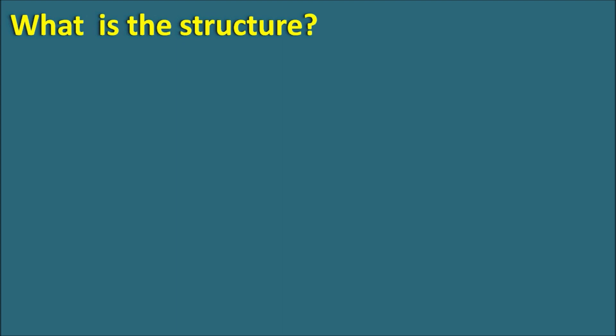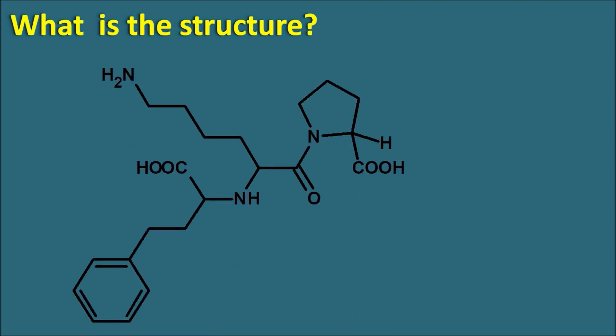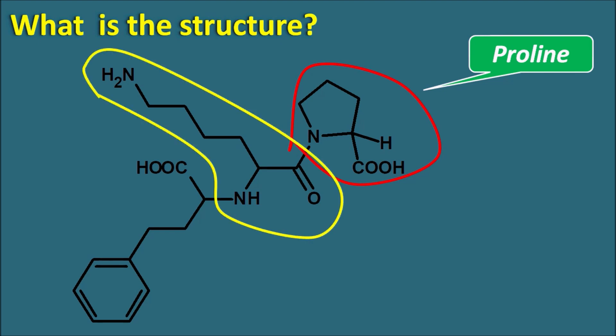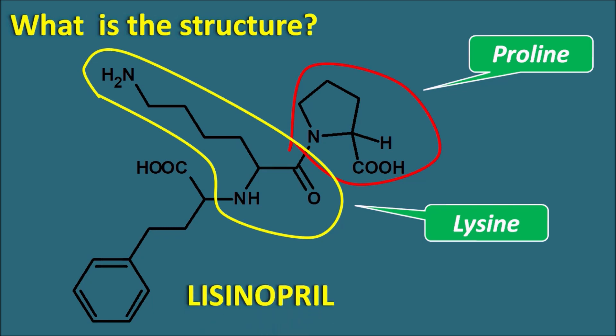What is the structure of Lisinopril? This drug is a dipeptide and within this structure we can observe two amino acids. One is a heterocyclic amino acid having the pyrrolidine nucleus — this is nothing but proline. One of the amino acids is proline, and this proline is attached with the other amino acid, which has a terminal amino side chain — a basic feature. This is nothing but lysine. So Lisinopril is a dipeptide made up of lysine as well as proline.